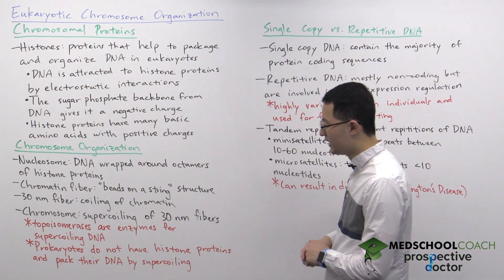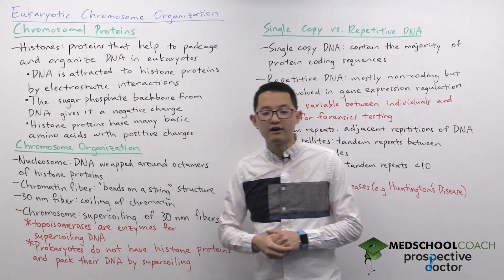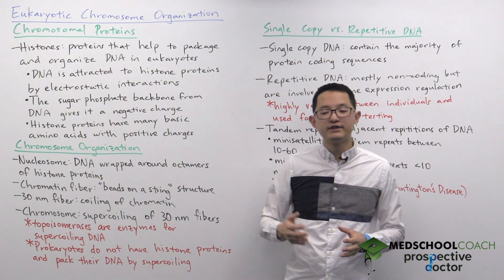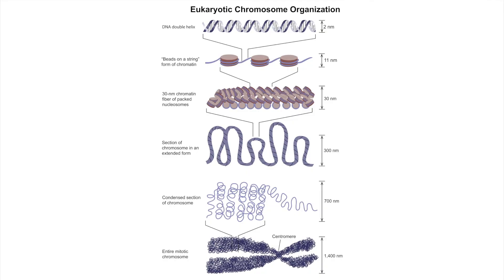Now let's look more at the organization of chromosomes. On this diagram you can see all the different levels of chromosome organization. At the top we have the basic structure of DNA — the double helix. Below that, you can see that the DNA will wrap around clusters of eight histone proteins, often called octamers.